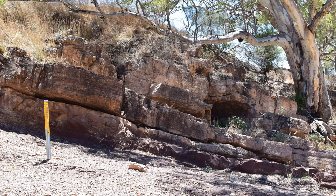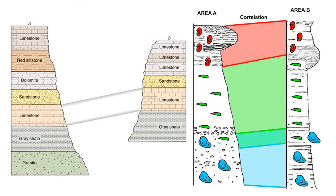More importantly, the golden spikes are used to designate sections and points that are reserved for scientific analysis. GSSPs are protected from development and destruction so that scientists can use them as references for drawing stratigraphic correlations between the GSSPs and other sites from around the world.